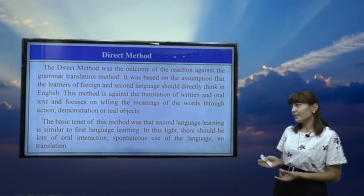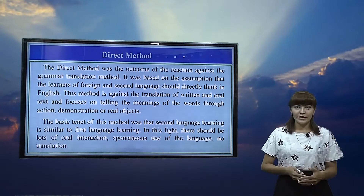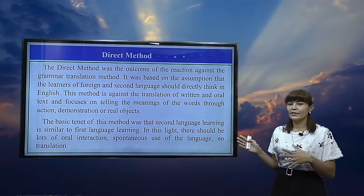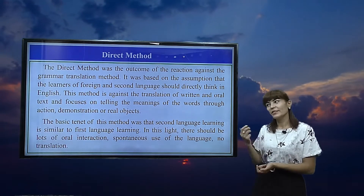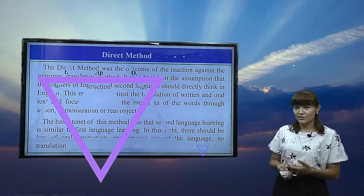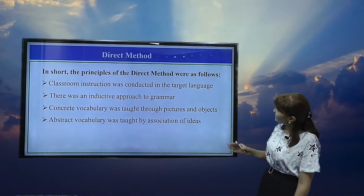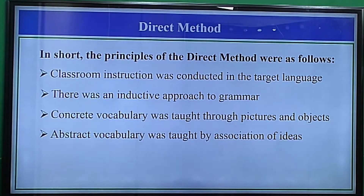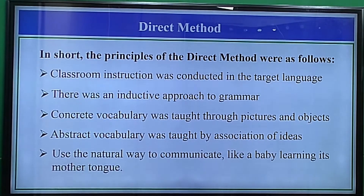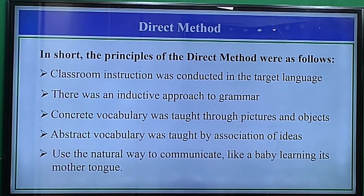The basic tenet of the direct method is that second language learning is similar to first language learning. There should be lots of oral interaction, spontaneous use of language, and no translation. The principles of the direct method were as follows: classroom instruction was conducted in the target language; there was an inductive approach to grammar; concrete vocabulary was taught through pictures and objects; abstract vocabulary was taught by association of ideas; and communication is done in a natural way, like a baby learning its mother tongue.